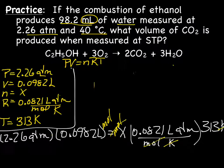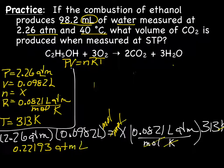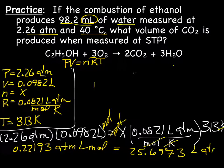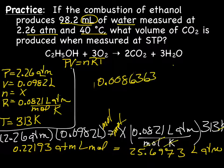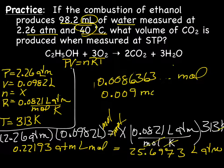Let's do some multiplication. When I multiply the left-hand side, I got 0.22193 atm liters moles equals, multiplying the right, I got 25.6973 liters atm. When solving for X, I came up with 0.0086363 mole. Our sig figs are going to be 1, so we're going to have 0.009 mole of H2O.